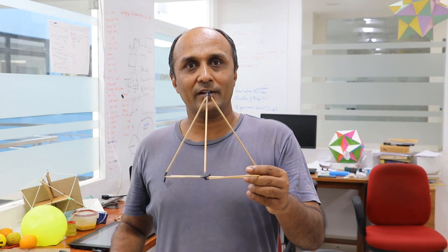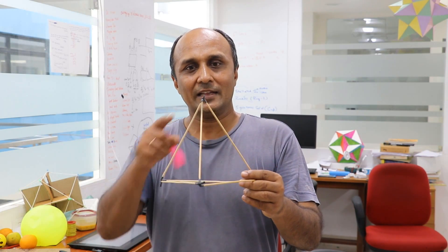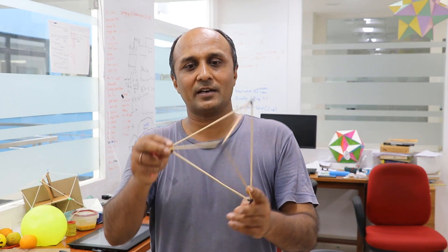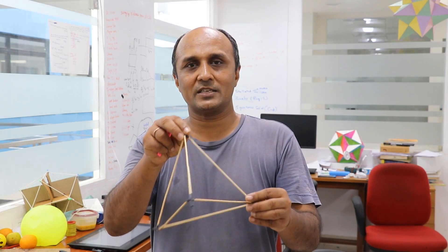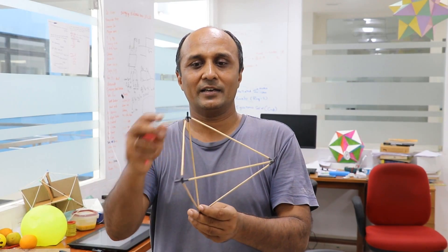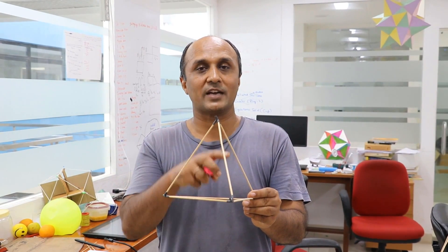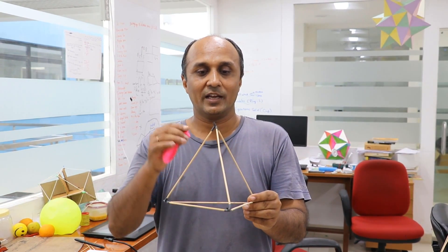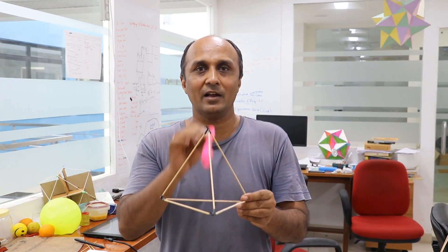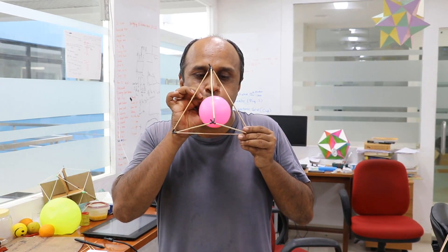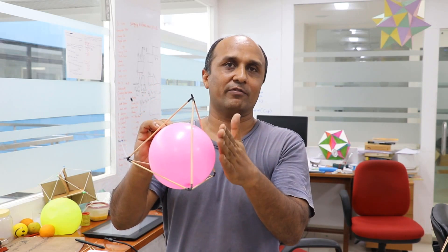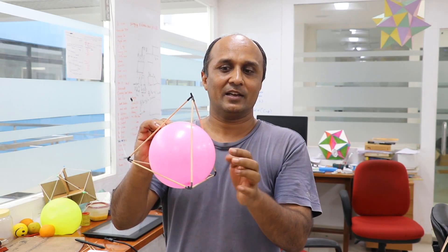Just like in every Platonic solid, we will see that because they are symmetrical — every point is equidistant from each other and also from the center of the structure — if we blow a balloon inside, this balloon will touch each of the surfaces. The radius of this balloon is called the inradius.